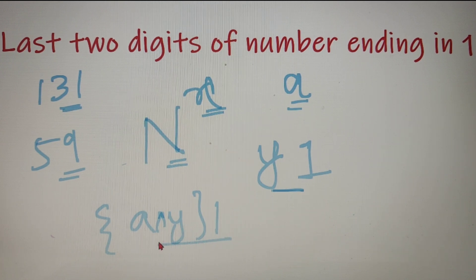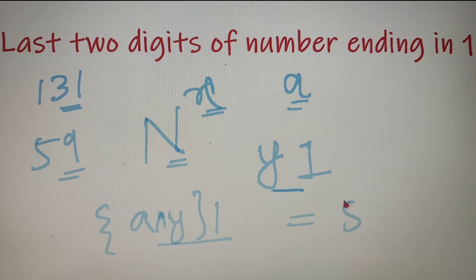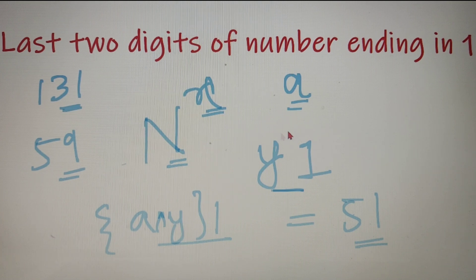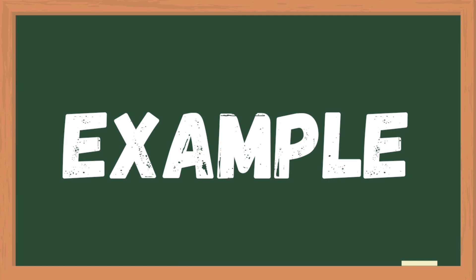For example, if the unit digit of a × y is equal to 5, then the last two digits is 51. If you are not clear with this explanation, let's solve a few examples that will clarify all your doubts.